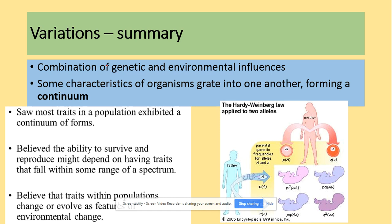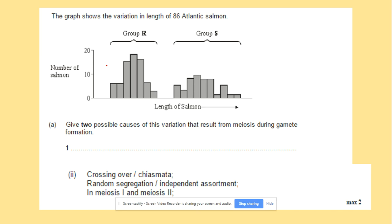Some characteristics of organisms create onto one another forming a continuum. Let's have a look at the questions. We've got here the graph that shows the variation in the length of 86 Atlantic salmon. We've got the number of the salmon here, the length over there, and we've got two different groups R and S. What we can see here is that the number of salmon in the group R is higher, and we need to give two possible causes of this variation that result from meiosis. From everything what we were talking about, you need to list two things that refers only to meiosis, which was the crossing over and which was the independent assortment. You need to select really carefully all of the aspects that we've mentioned about in this video to produce your final answers.